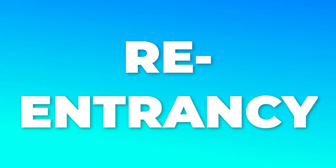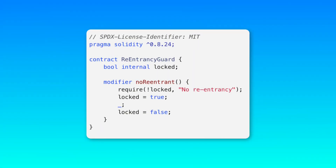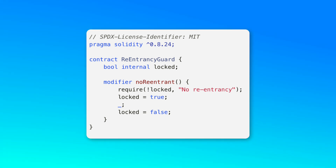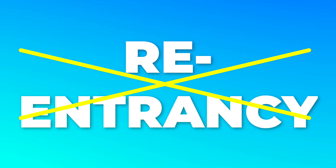The resource model also prevents re-entrancy attacks natively. Re-entrancy are complex attacks that were the source of many hacks with Solidity smart contracts. There is a solution in Solidity, but it's up to smart contract developers to implement the protection themselves. And if they are not careful, they will be vulnerable to re-entrancy. With Move, there is no need to worry about this because of the resource model — re-entrancy attacks are just not possible.